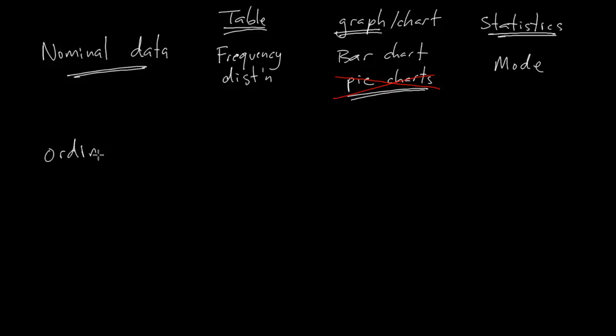Now, ordinal data is kind of interesting in your course, because even though they give it a definition, they show you how to distinguish ordinal data from the other types, we're never shown what the proper table is, what the proper graph is, what the proper statistics are. Instead, in your textbook and in your course, they're very specific. Ordinal data is to be treated the same as nominal data.